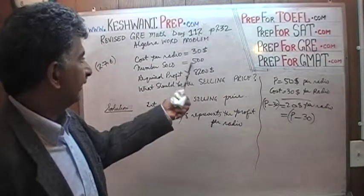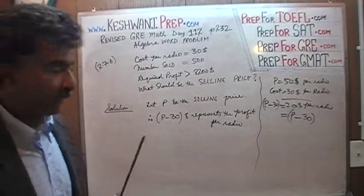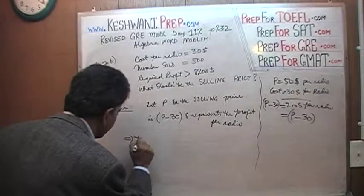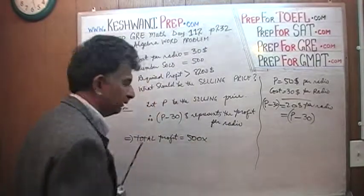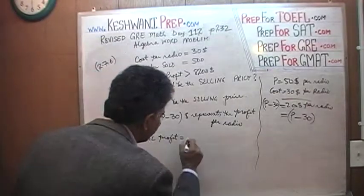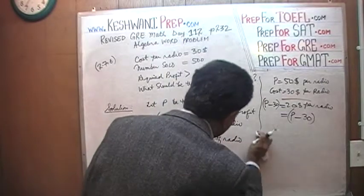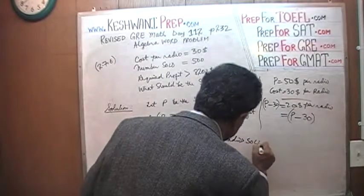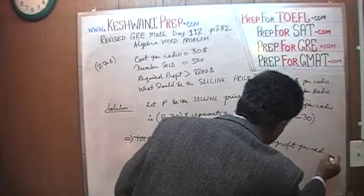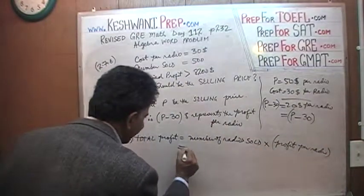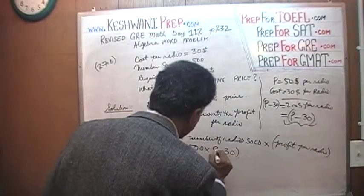How many radios are we selling? We're selling 500 radios. So 500 times the profit per radio represents the total profit. The total profit equals the number of radios sold times the profit per radio. The number of radios sold is 500, and the profit per radio is P minus $30. That's your total profit.